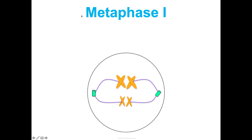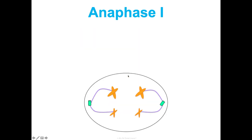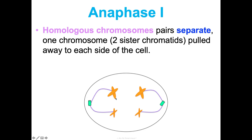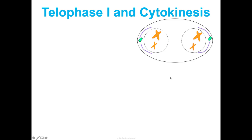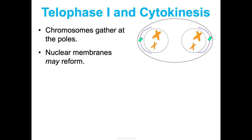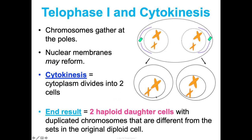After that, metaphase one — still think middle. Here's the difference: your homochromos pairs line up in the middle of the cell, but in pairs, not single file, because the whole point of this process is to break up the pairs. Anaphase one: the homochromos pairs separate — they're no longer pairs. One chromosome from each pair is pulled to either side, but the sister chromatids are still attached. Then telophase one and cytokinesis: chromosomes gather at either end, nuclear membranes may or may not reform, and then the cytoplasm splits into two cells — ending with two haploid daughter cells with duplicated chromosomes.